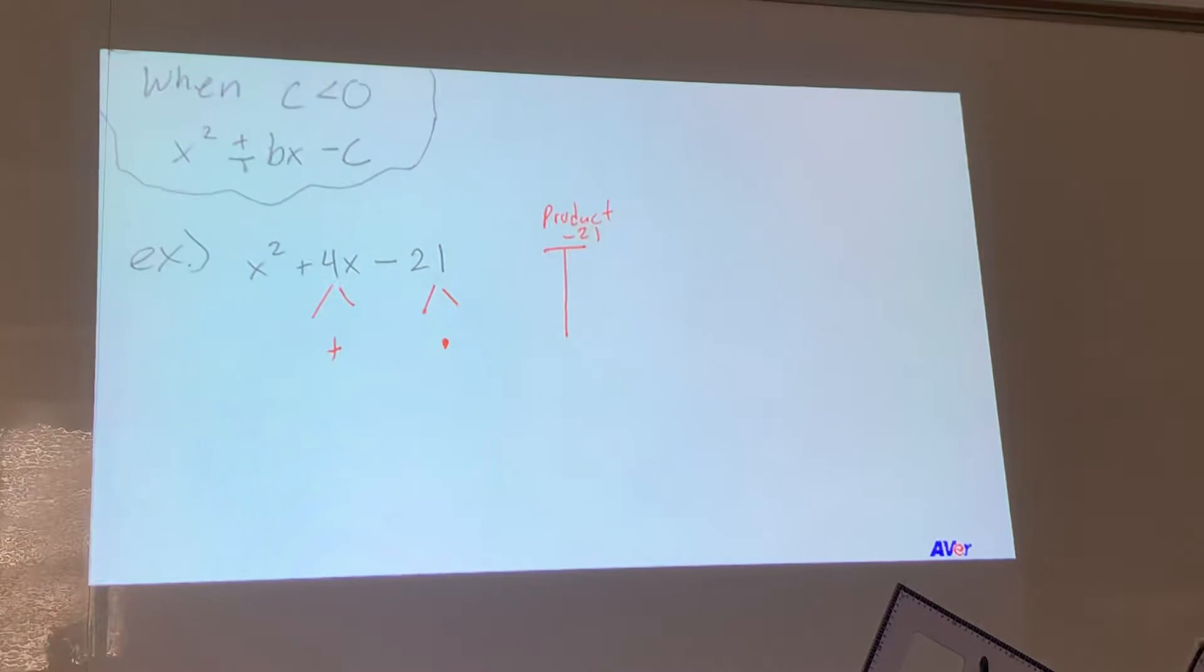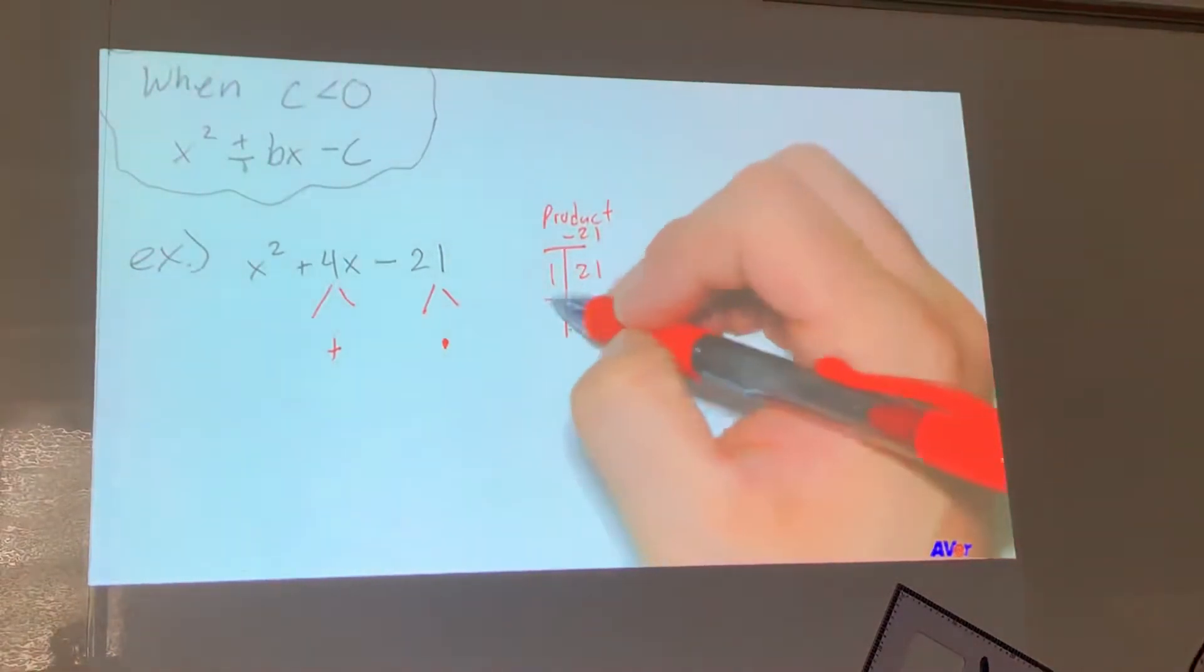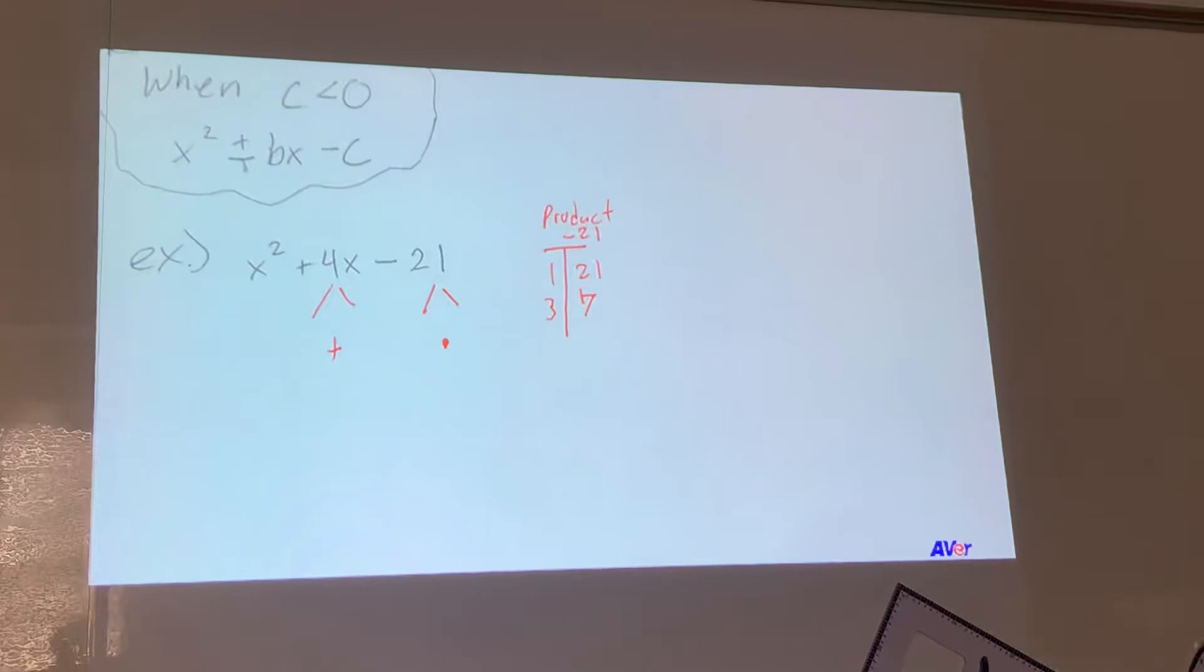So we'll do like the product of negative 21. Alright, so what are the products or the factors of negative 21? Gloria? 1 and 21. 3 and 7. Okay, we'll ignore the negatives right now. Yeah. That's it. 1 and 21, 3 and 7.